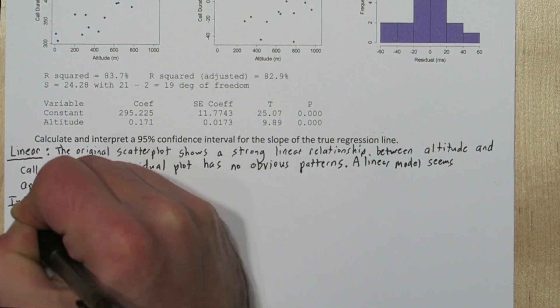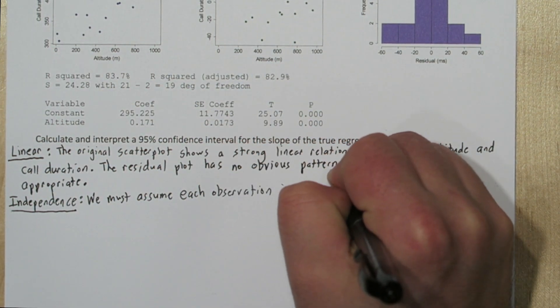For the independence condition, we must assume that each of these observations were independent of the others.